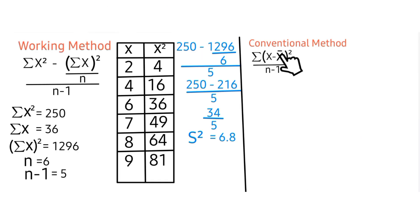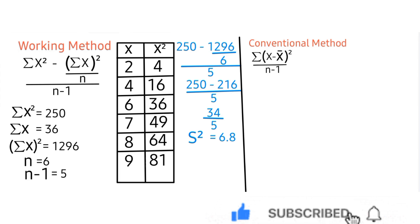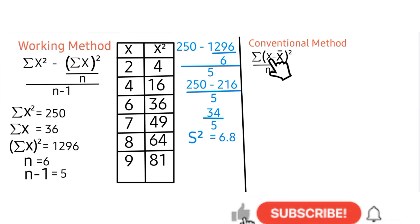Now let's proceed to using the conventional method. If you are getting value from this video, please do like, leave a comment, and if you are yet to subscribe to my channel, please kindly hit the subscribe button and turn on the notification bell. Looking at the conventional method, we can see the formula: summation of (x minus x̄)² all over n minus 1.